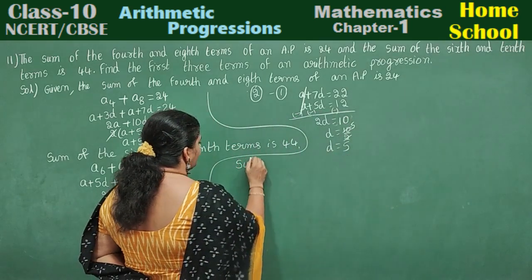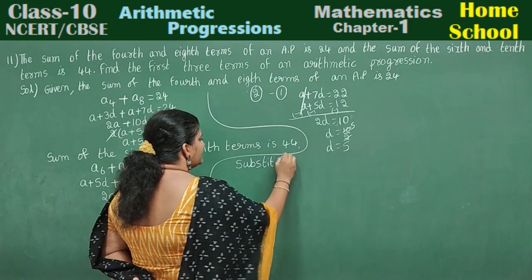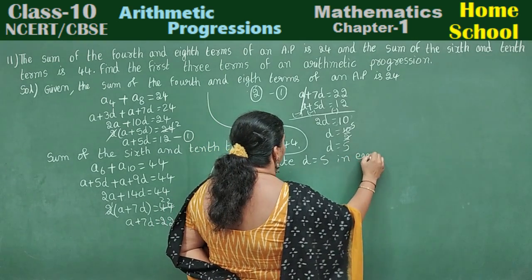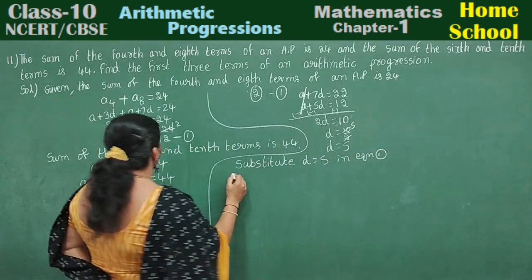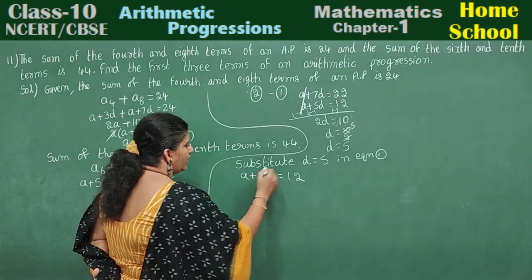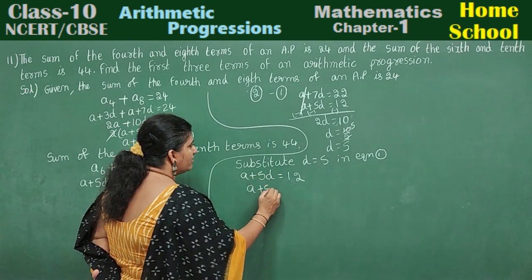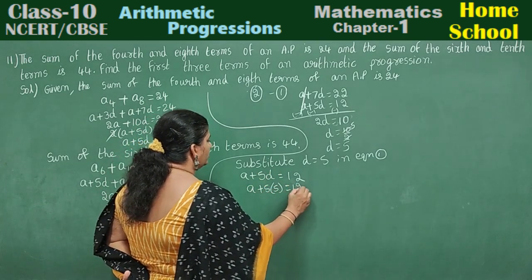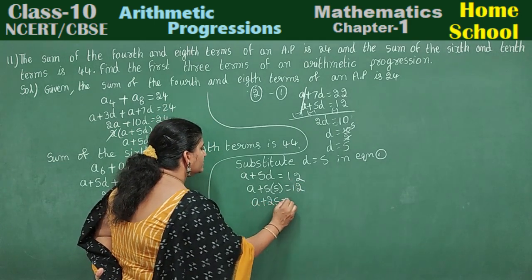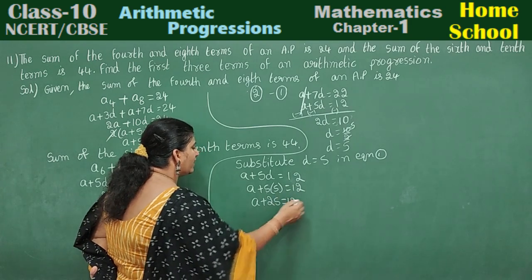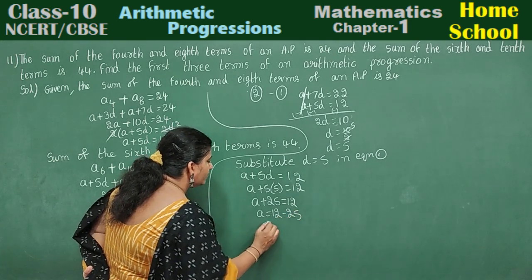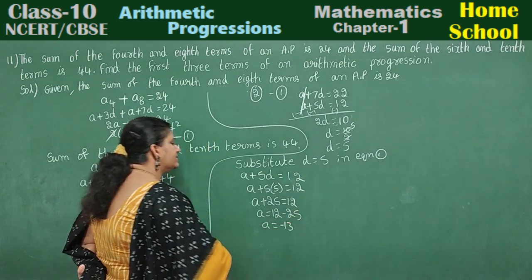Substitute D equals 5 in equation 1: A plus 5D equals 12. A plus 5 into 5 equals 12. A plus 25 equals 12. Send 25 to the other side: A equals 12 minus 25. A equals minus 13.